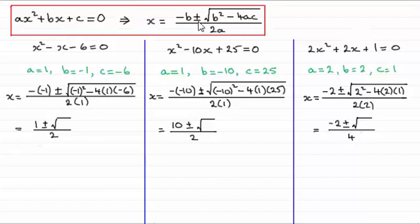x equals minus b plus or minus the square root of b squared minus 4ac all divided by 2a. Now this quantity inside the square root here, b squared minus 4ac, is often referred to as the discriminant. The discriminant is b squared minus 4ac.